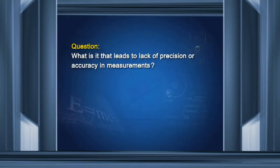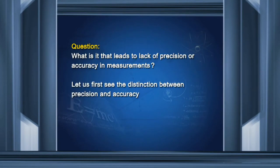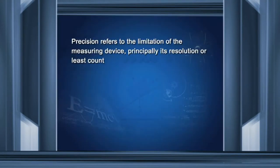So we may ask: what is it that leads to lack of precision or accuracy in measurements? Let us first see the distinction between precision and accuracy. Precision refers to the limitation of the measuring device, principally its resolution or least count.